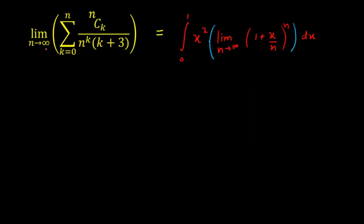From the previous slide, I've converted the limit into: integral from 0 to 1 of x^2 times limit n→∞ of (1 + x/n)^n dx. I'll evaluate the limit separately first and then plug the value into the integration. Since x varies from 0 to 1, it's a fraction, and as n→∞ the indeterminate form is clearly 1 raised to infinity.